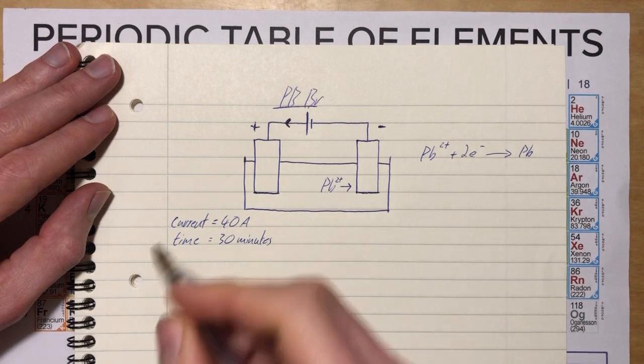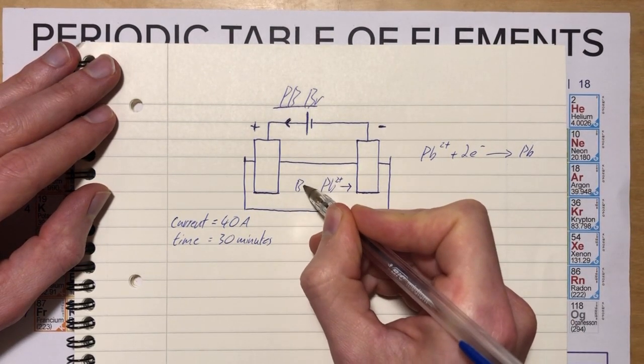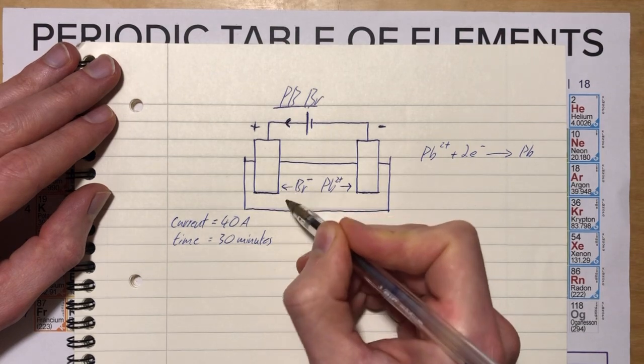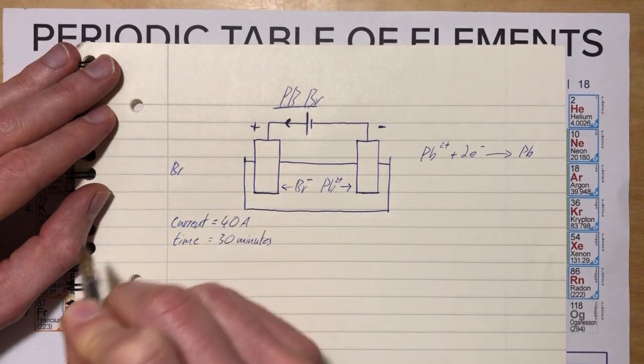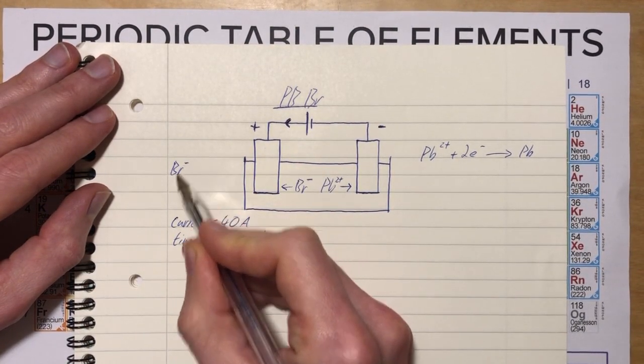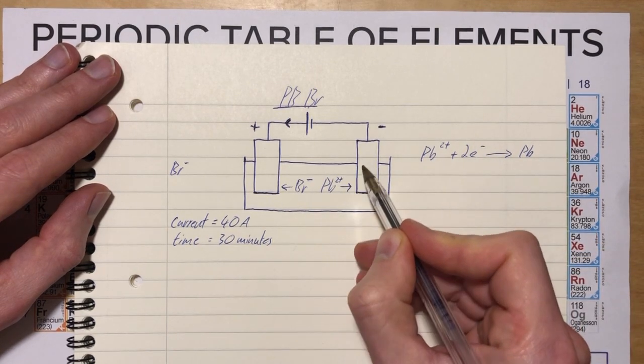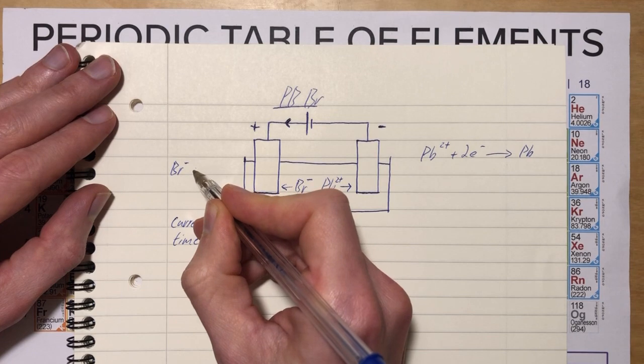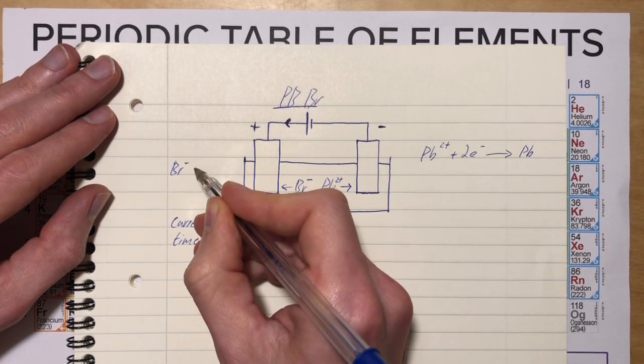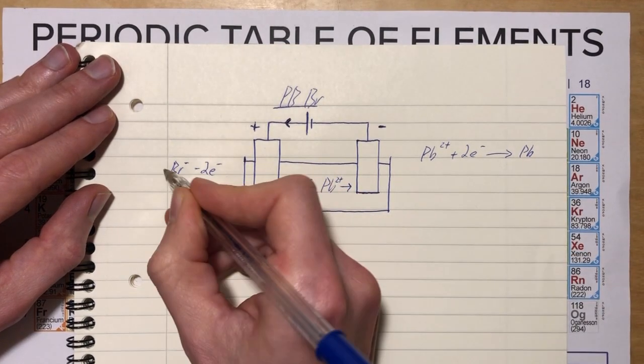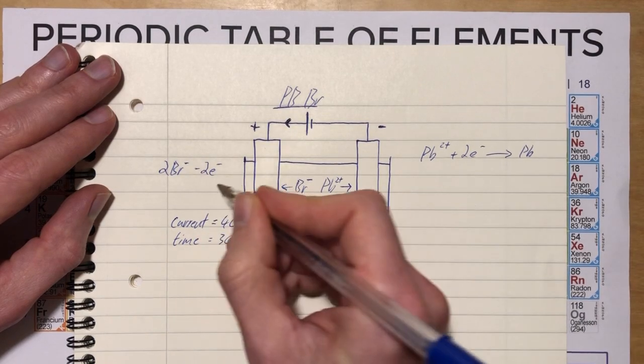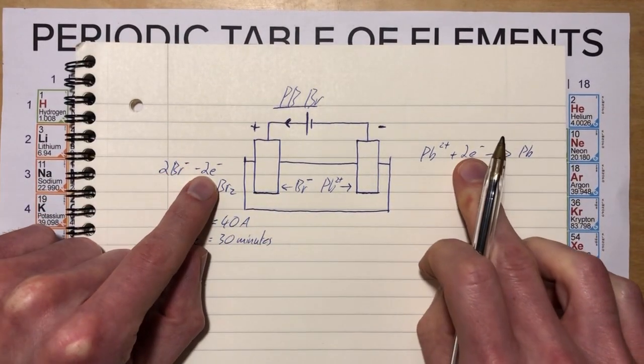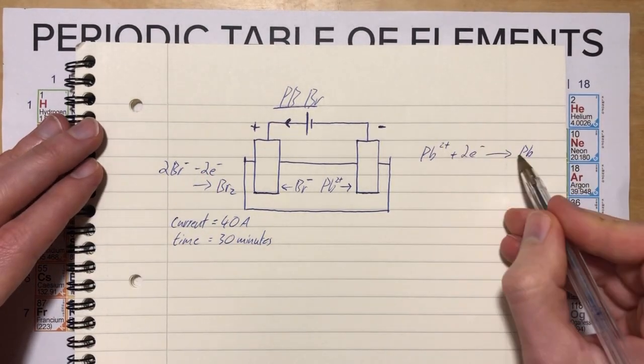Now, what's going on at the anode? The bromine forms a single minus ion and migrates to the anode. We have Br⁻, and it needs to lose an electron. But we had two electrons at the cathode, so we need two electrons here to balance. Therefore, it has to be two bromine ions: 2Br⁻ → Br₂ + 2e⁻. The number of electrons always has to match in half equations. This is our cathode equation, and this is our anode equation.